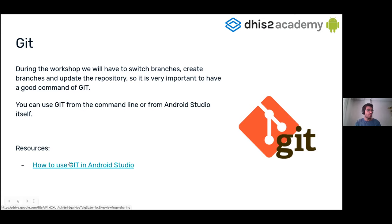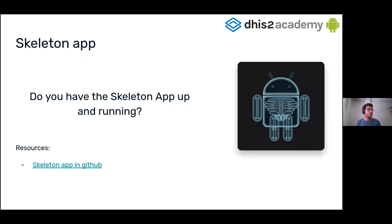In the resources, we have a link to a presentation about how to use Git in Android Studio in case you need it. Another thing we are going to use in this workshop is the skeleton application — a sample application using the SDK, intended to be a starting point for Android application development and as an example for SDK use cases like listing programs and doing searches. Having the skeleton app up and running before the workshop is a requirement.